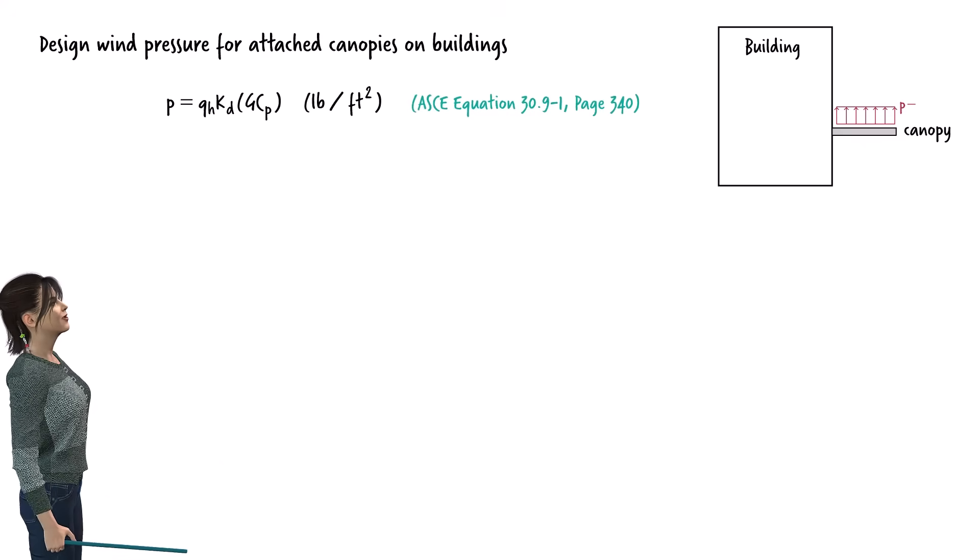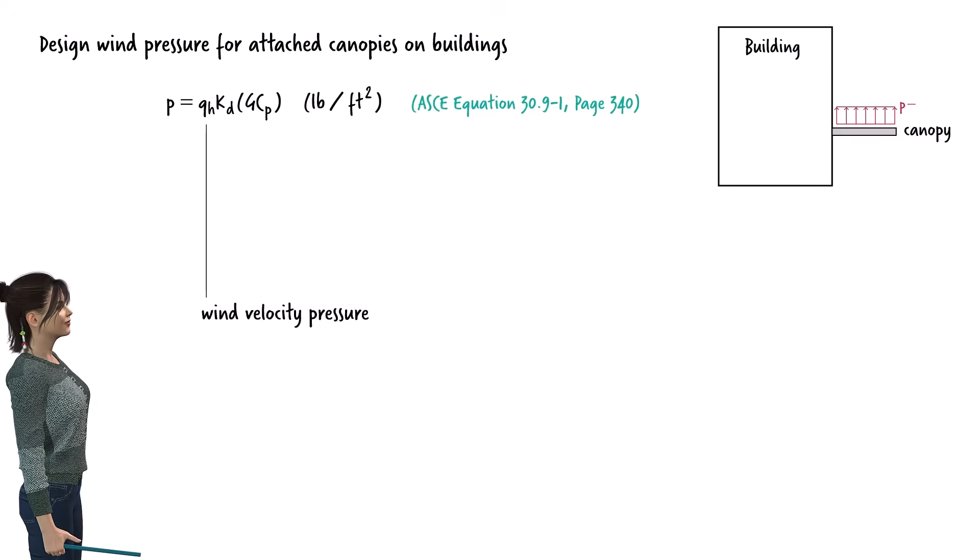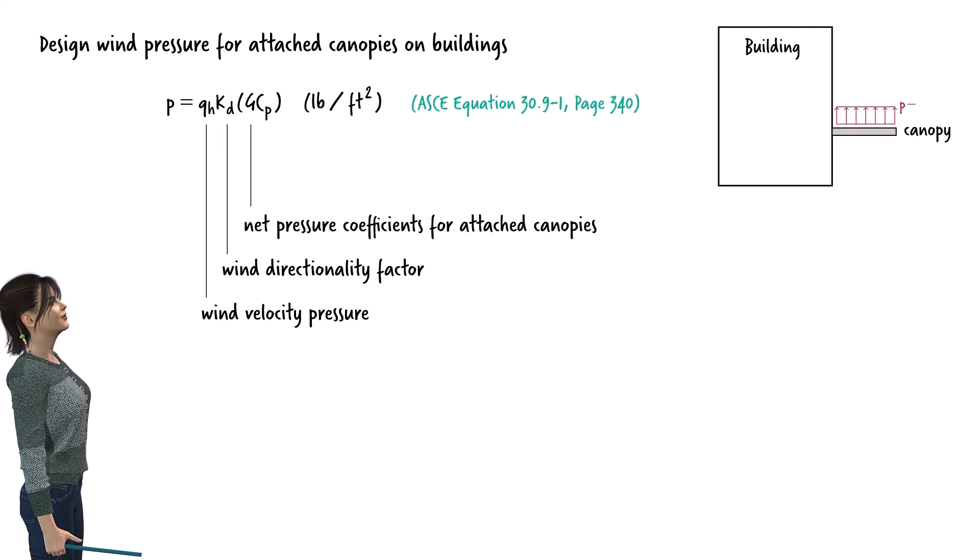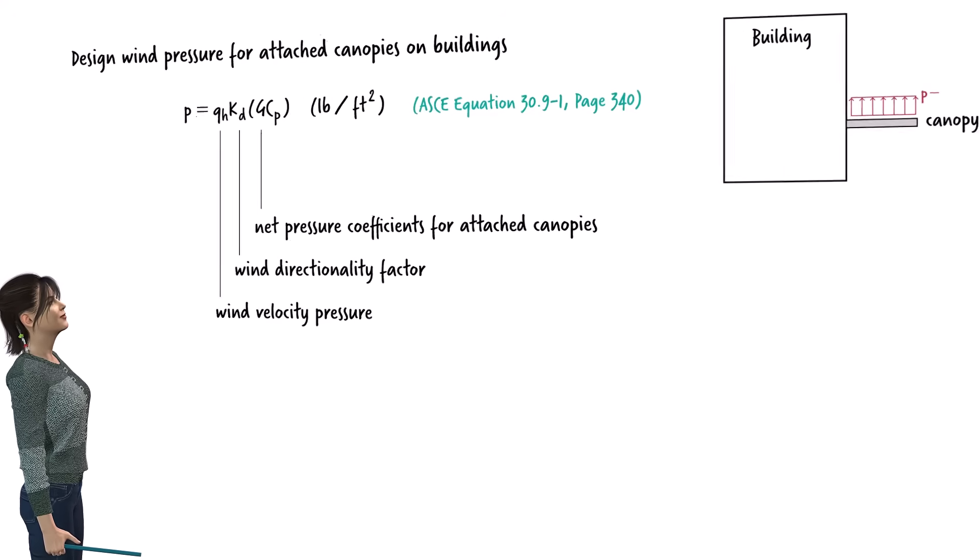The terms in the equation are Q sub H, wind velocity pressure; K sub D, wind directionality factor; and GC sub P, net pressure coefficients for attached canopies. Let's examine each of these terms in detail.